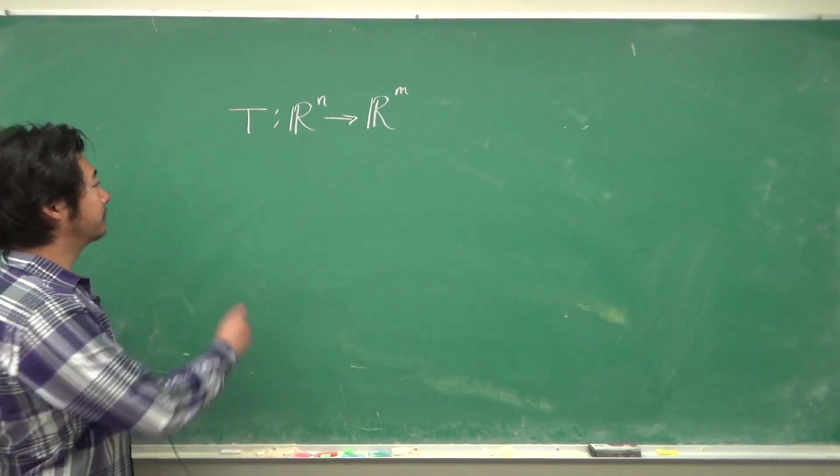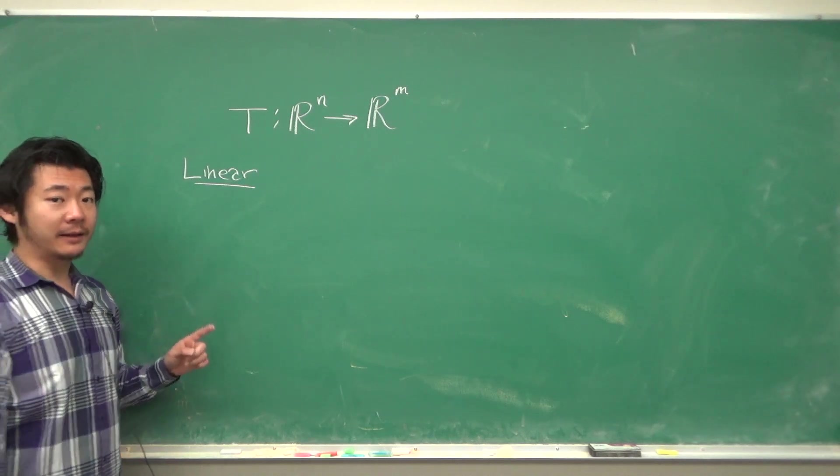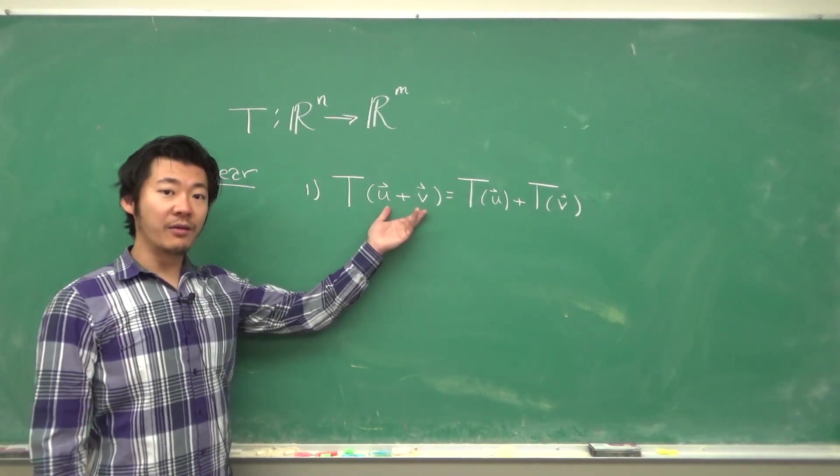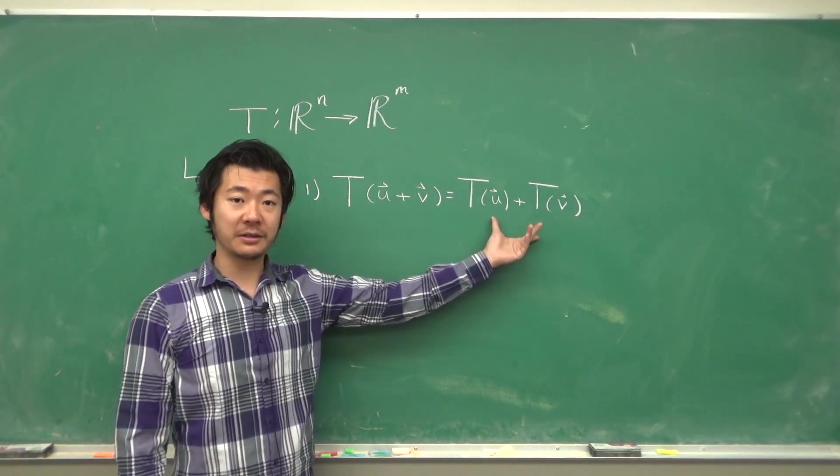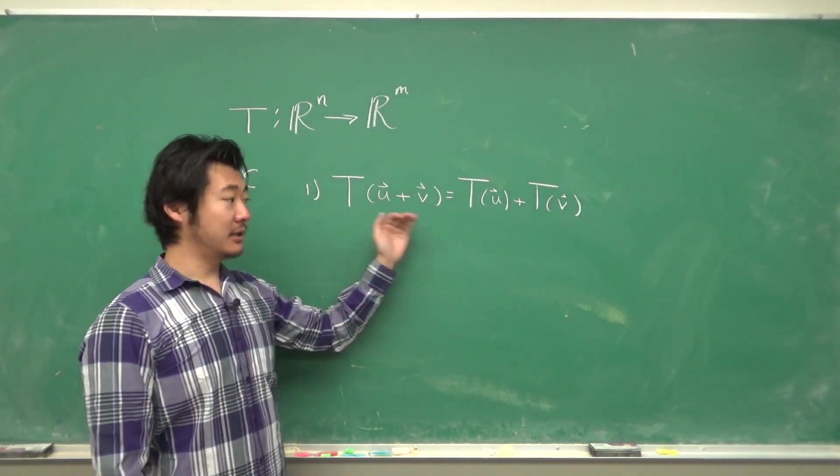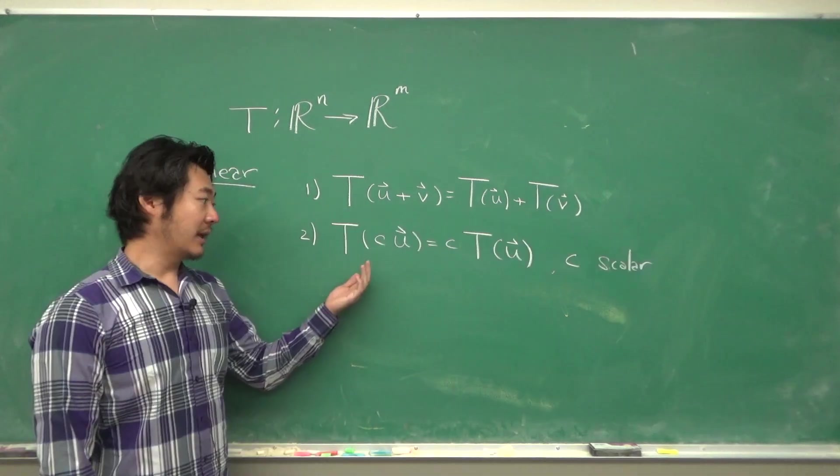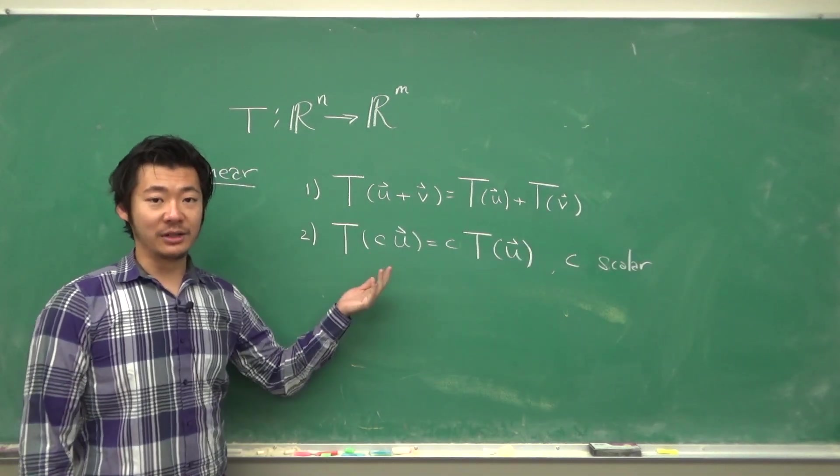And a linear transformation has the additional requirement that the sum of two vectors being transformed becomes the sum of the transformed vectors. So this T distributes and scalars move in and out of linear transformations.